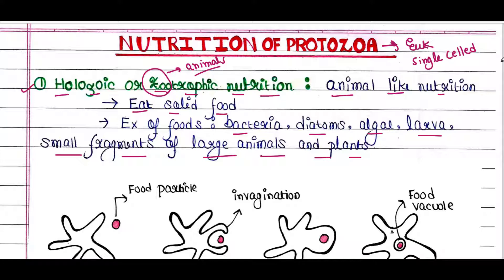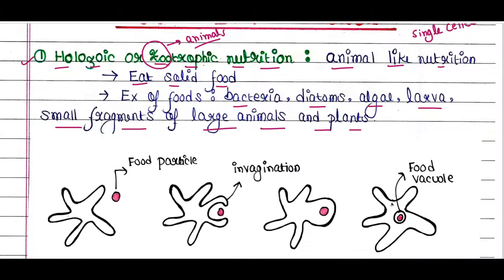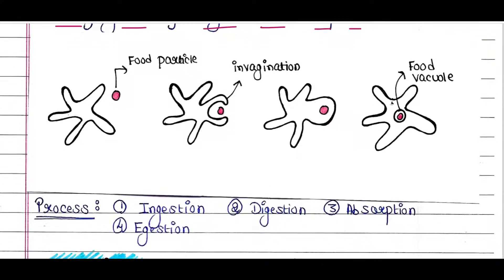We will see the mechanism of this holozoic nutrition. The process includes four steps: first is ingestion, second is digestion, third is absorption, and fourth is ejection.